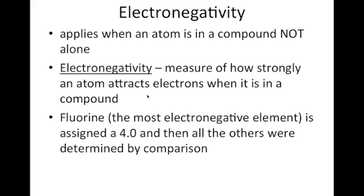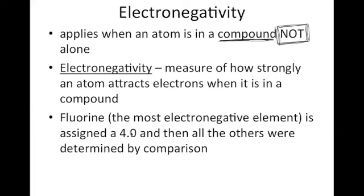The last trend is electronegativity, and this will come back when we start talking about bonding. Electronegativity applies only when an atom is in a compound — not when it is in its pure state. It's a measure of how strongly an atom attracts electrons when it's in a compound. I like to think of it as its "hogginess" value — how much is that element going to hog the electrons? Fluorine is the most electronegative element; it was just given a value of four, and then everybody else on the periodic table was determined by comparison to fluorine, so four is the highest you'll find.